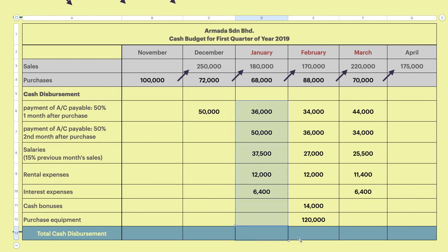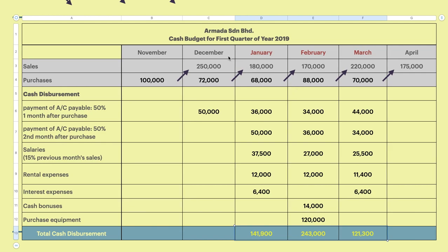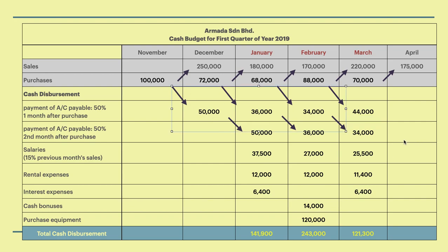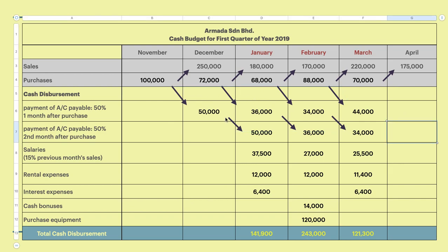Total all the disbursements and you will get: January 141,900, February 243,000, March 121,300. That gives us the total cash disbursements. To recap the key tips: you must have a column for two months prior and also one month in advance. The arrow points downward to show the flow. You have now finished Step 2. We will continue with Step 3 in the next part.